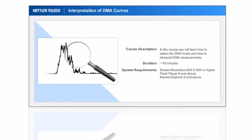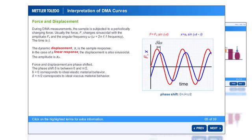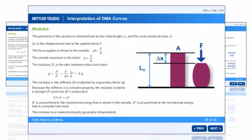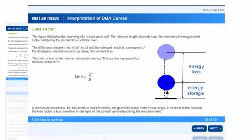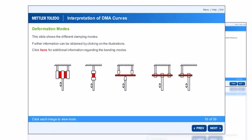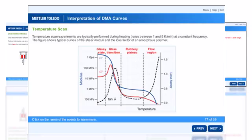This course explains the process of selecting DMA mode and interpreting DMA measurements. The first unit explains basic principles such as force and displacement, stiffness, modulus, and loss factors in measuring DMA curves. It then discusses the different deformation and measurement modes.